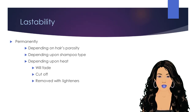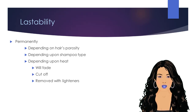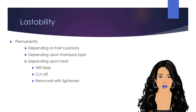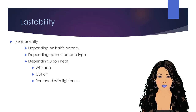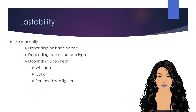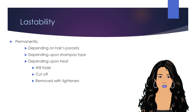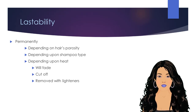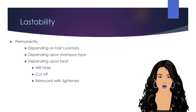Permanent colors are designed to last in the hair permanently, depending on the hair's porosity, the type of shampoo the client uses, how much and what types of heat are applied to the hair, and how often. Permanent colors will still fade over time depending upon the treatment of the hair. Other than the typical fading of the color molecules, the only ways permanent colors can be removed from the hair is to be cut off or removed with lighteners.